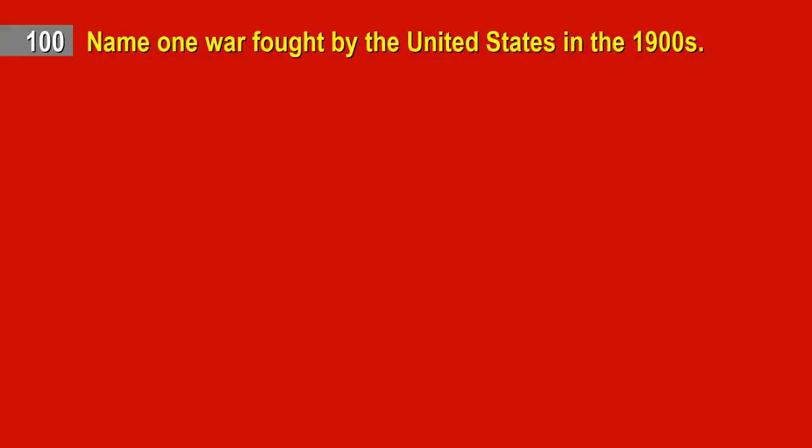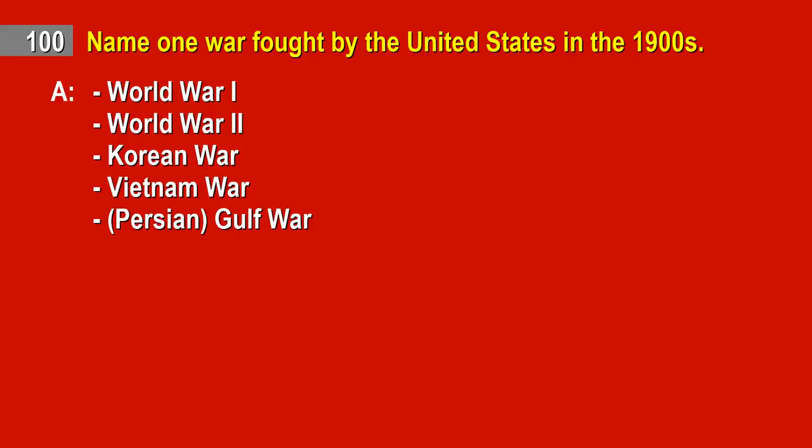Question 100. Name one war fought by the United States in the 1900s. Answer: World War I. World War II. Korean War. Vietnam War. Persian Gulf War.